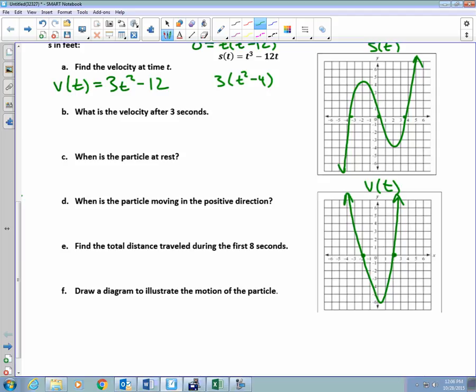So let's answer some other questions. What is the velocity after 3 seconds? If I want to find the velocity, do I plug 3 into the position function or the velocity function? Yeah. So velocity at time 3 is equal to 3 times 3² minus 12, or 27 minus 12, which is 15. Now, every time we find a derivative, if we can provide a label, we should. What is the label here? Feet per second.